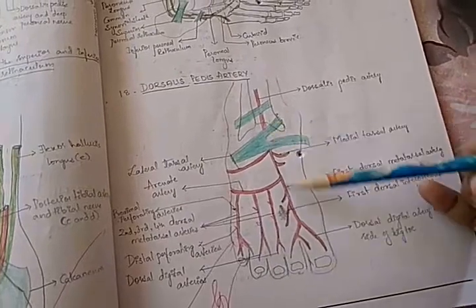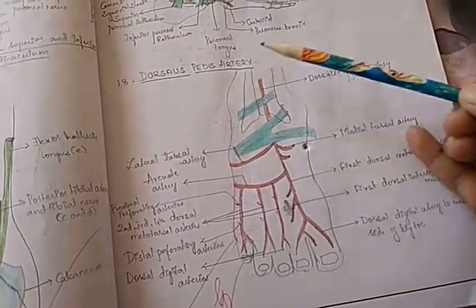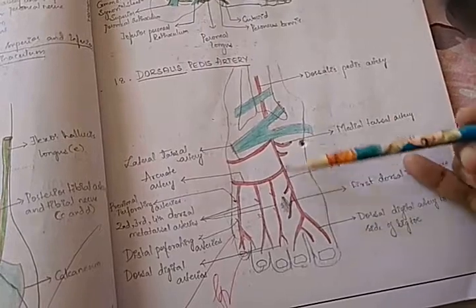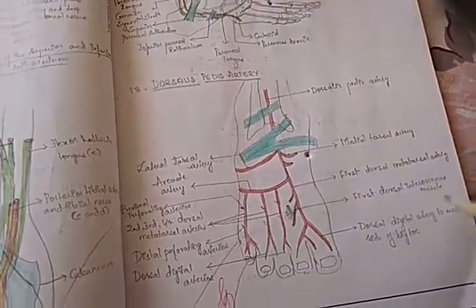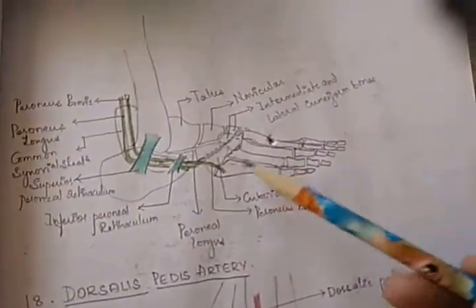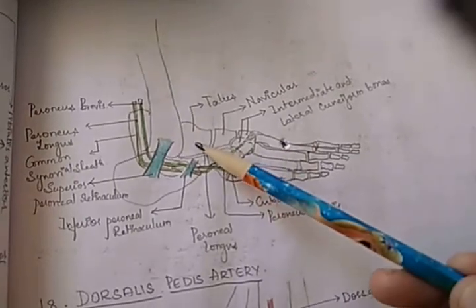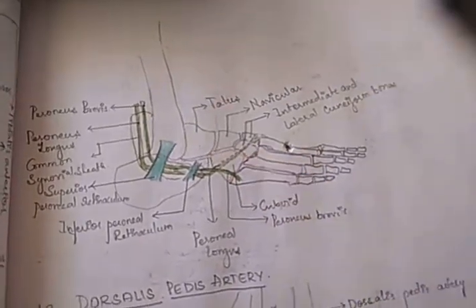The toes. They have drawn the dorsalis pedis artery. Where is that? These are the artery. Whatever red they have drawn, that will be the artery. And bones. This is the bone here. These are the bones. So nicely they have drawn. This is the talus. Navicular. So nicely they have drawn.